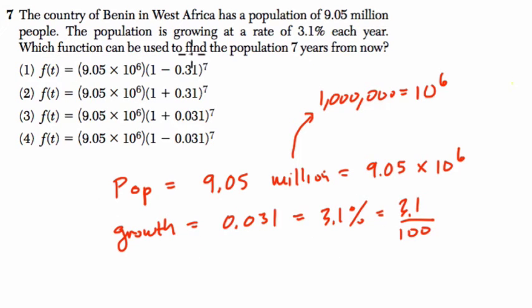Which function we use to find the population 7 years from now? So the way this works, this is exponential growth. And you start with 9.05 times 10 to the 6th, right? Which I see in each of my equations here. And then you're going to take that amount and try to look at a population increase of 3.1%.